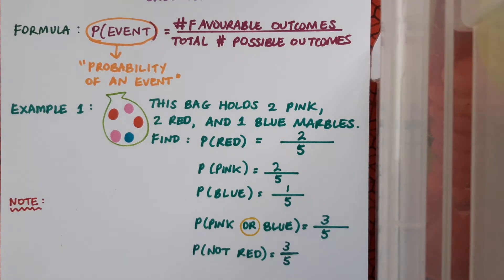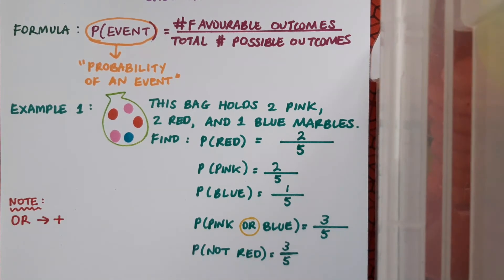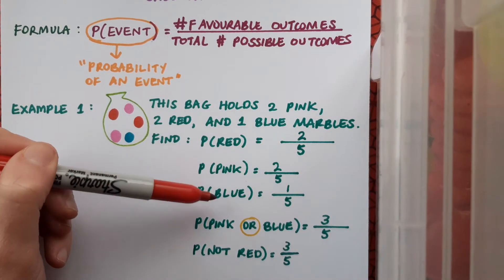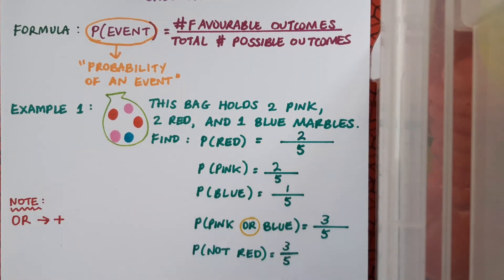At this point it's interesting to note that generally in probability the word OR indicates addition. You can see in this case that the probability of pink or blue is the exact same as the probability of pink plus the probability of blue, giving me three over five.